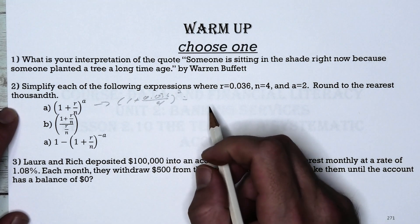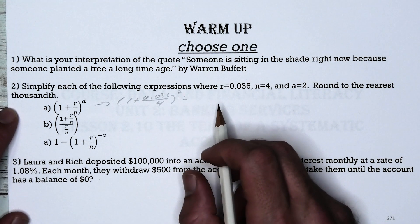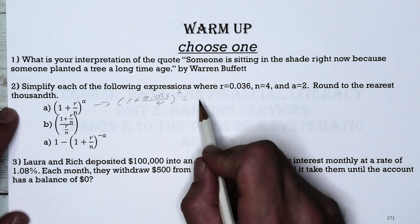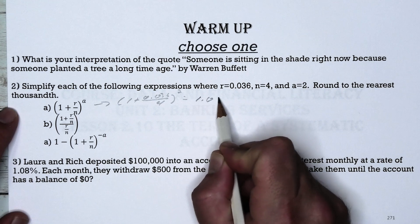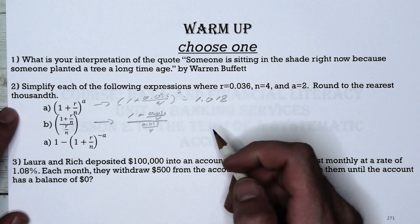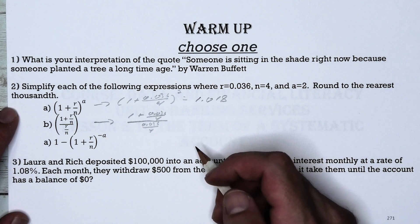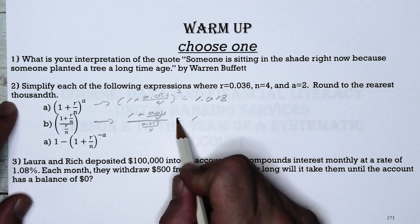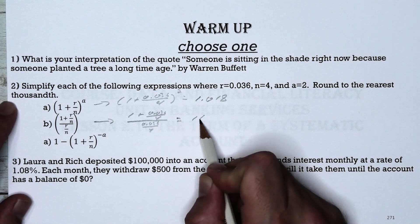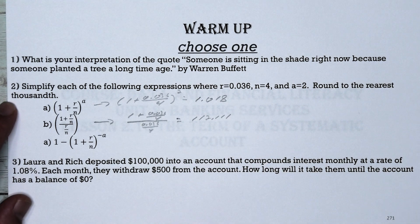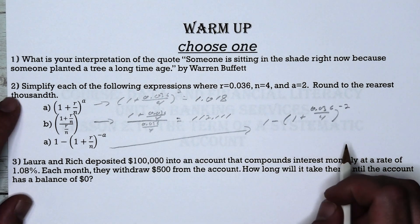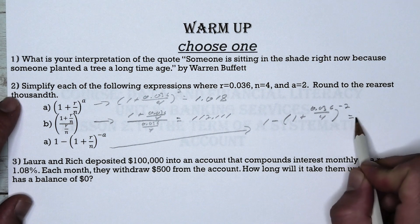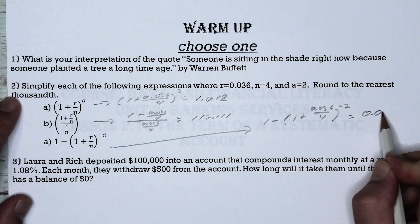The first expression, 1 plus r over n to the a power, gives us 1 plus 0.036 over 4 squared, which gives us 1.018. The second gives us 1 plus r over n, all over r over n. By substituting in our values and using a calculator we get 112.111. And 1 minus the sum of 1 plus r over n to the negative a power gives us 0.018 after substituting all values.